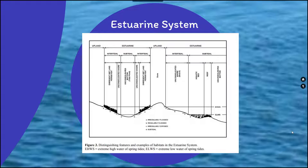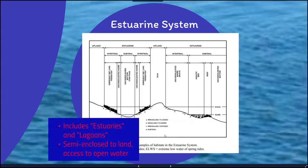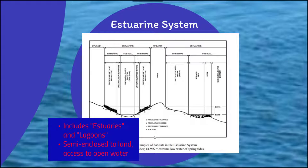For the estuarine system, this is typically what we think of as estuaries or wetlands. Estuaries tend to have more of a protected region that is submerged at times during the day — some regions are continually submerged. You have upland areas above the waterline, and then regions covered by tidal water intermittently as well as consistently along the bottom. There are different types of substrate along the bottom, and it's semi-enclosed by land with access to open ocean water.